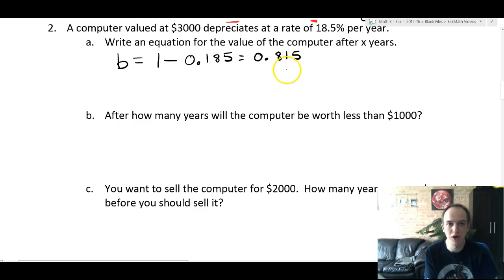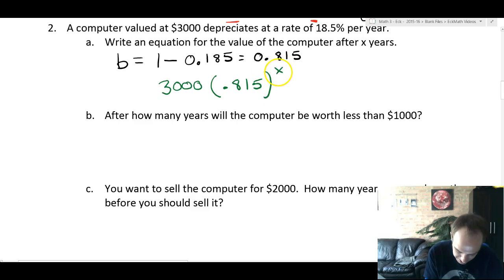Which means that there's 81.5 percent left over every year that this computer depreciates. So as an equation, we're gonna do 3,000 times that 81.5 percent as a decimal, 0.815 to the x. Gives you a value in dollars.